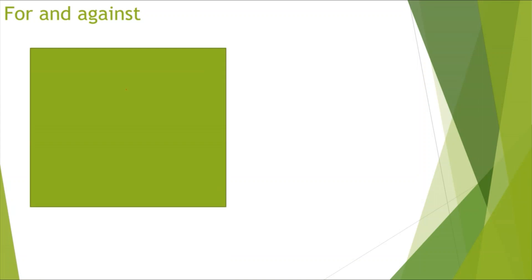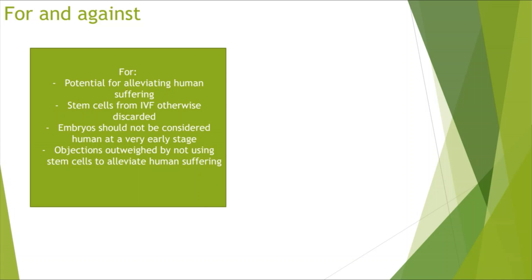Looking at the for and against of using stem cells. So looking at for first. So there's potential for alleviating human suffering, and there's so many diseases and illnesses that can be treated by stem cells, for example skin disease and diabetes, so they can be quite useful for reducing human suffering. Stem cells can be used from IVF which would otherwise be discarded, so they would be discarded anyway, so why not just use them to treat diseases. Embryos should not be considered human at a very early stage, so just after fertilization's occurred we can't really say that the embryo is a human at that stage, maybe later on but not at the very earliest stage. Objections outweighed by not using stem cells to alleviate human suffering. It can be argued that if we don't use stem cells we would be causing the suffering which could otherwise be avoided.